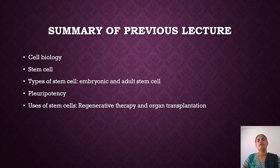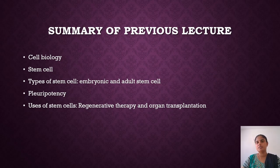Stem cells are undifferentiated mass of cells that can be developed into any type of cell. We also learned about types of stem cells, that is embryonic and adult stem cells. The stem cells present in the embryo stage are called embryonic stem cells, and the stem cells found in adults are called adult stem cells.